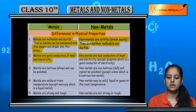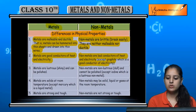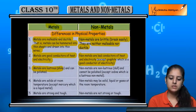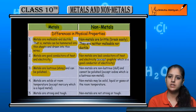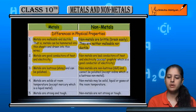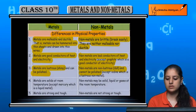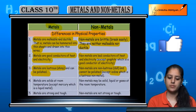Metals are good conductors of both heat and electricity, but non-metals are bad conductors of heat and electricity — except graphite, which is a good conductor of electricity. Metals have lustre, they shine and can be polished, but non-metals have a dull appearance and cannot be polished — only iodine among non-metals has lustre.